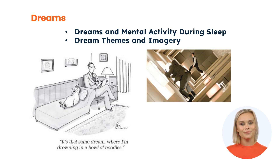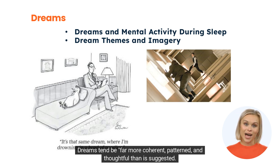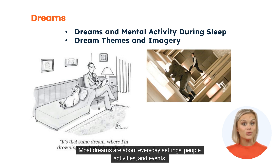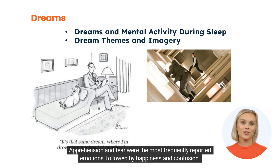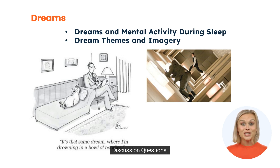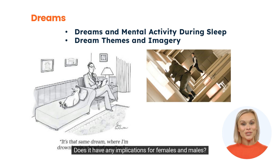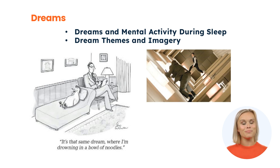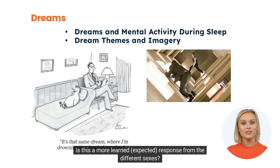Dream themes and imagery: Dreams tend to be far more coherent, patterned, and thoughtful than is often suggested. Most dreams are about everyday settings, people, activities, and events. Apprehension and fear were the most frequently reported emotions, followed by happiness and confusion. Women were more likely to experience emotions in their dreams, and men are more likely to experience physical aggression. Discussion Questions: Why this distinction? Does it have any implications for females and males? Is this a more learned, expected response from the different sexes?